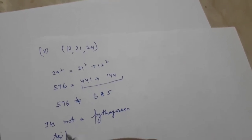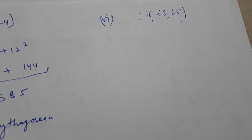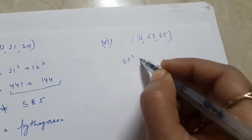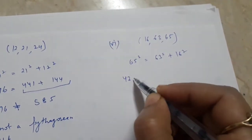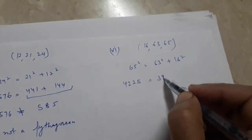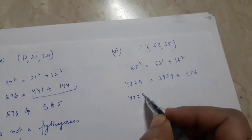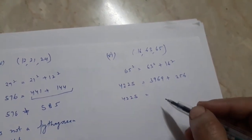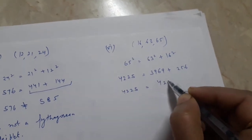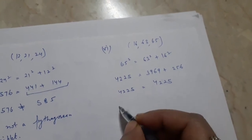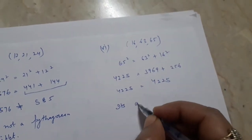In the sixth part, the three natural numbers are 16, 63, and 65. So 65² should equal 63² + 16². 65² = 4225, 63² = 3969, and 16² = 256. The addition of 3969 and 256 equals 4225. Yes, they both are equal, so LHS equals RHS, and these three natural numbers also make a Pythagorean triplet.